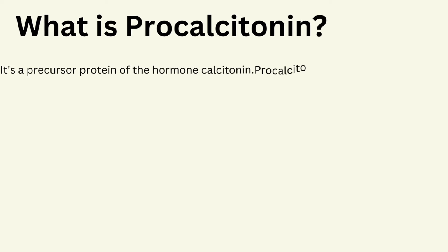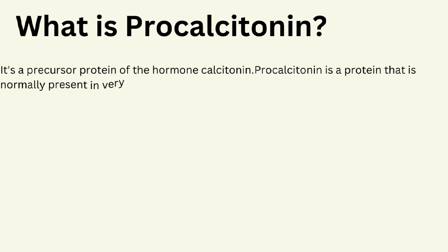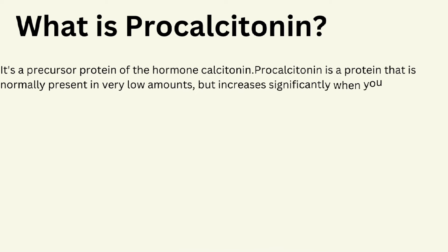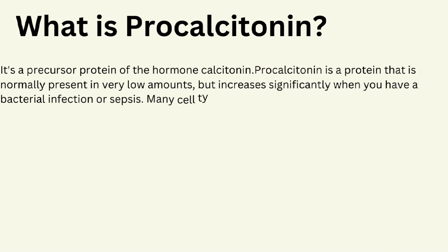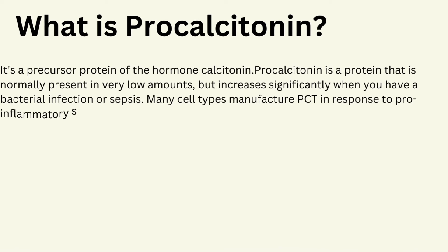First of all, let's go by the definition. Procalcitonin is a precursor protein of the hormone calcitonin. It is a protein that is normally present in very low amounts but increases significantly when you have a bacterial infection or sepsis.